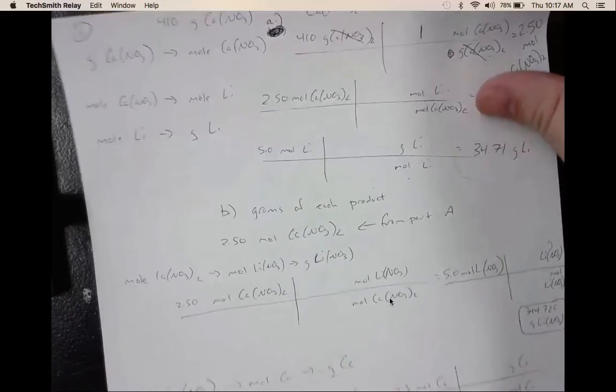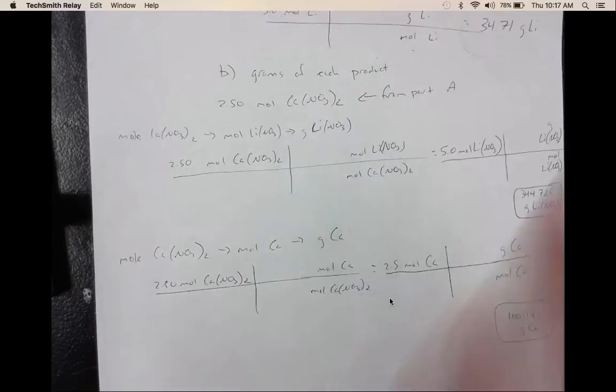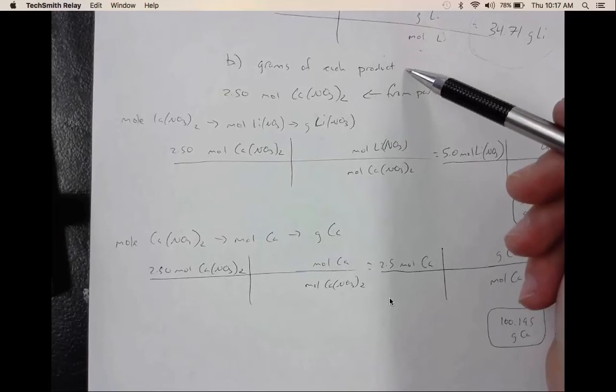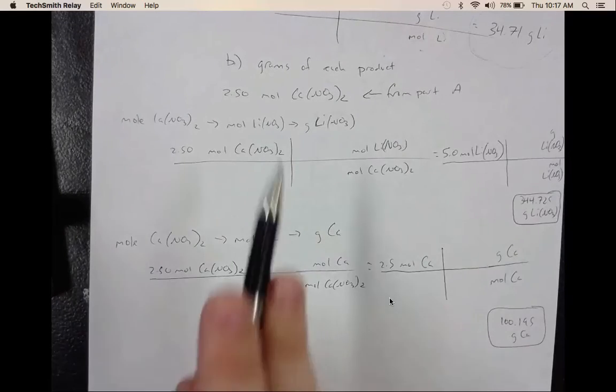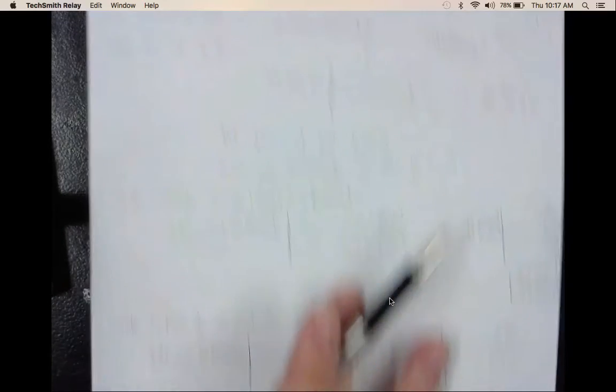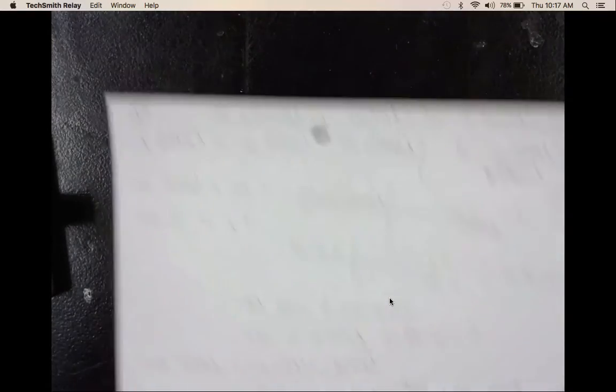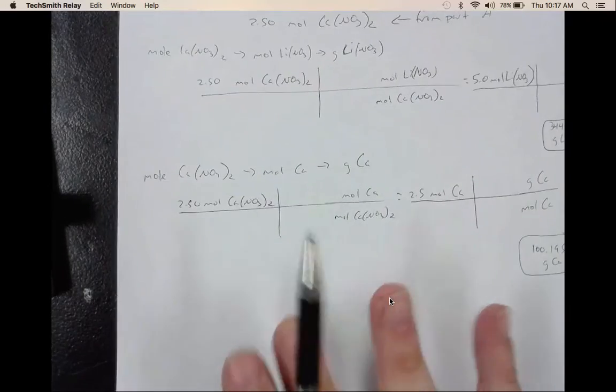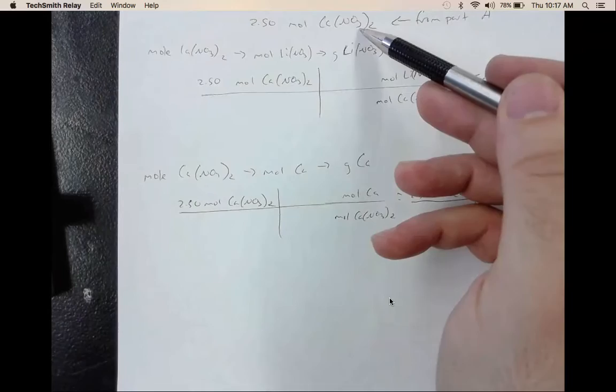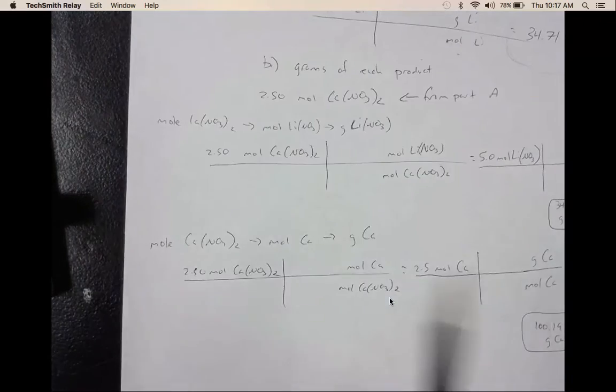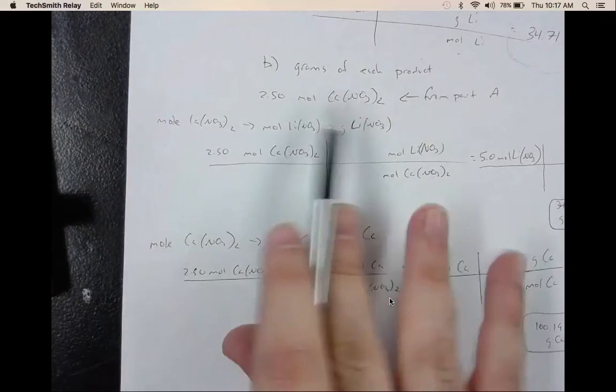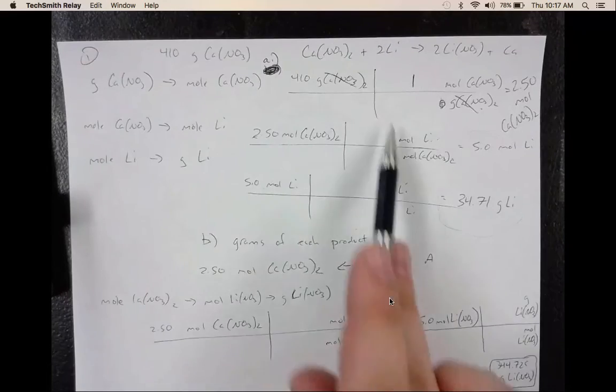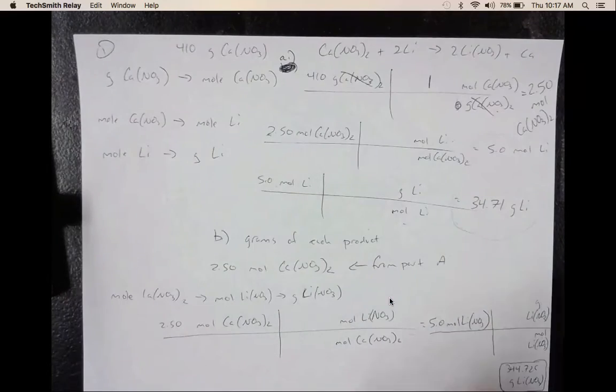So now we are on to part B. Part B is asking us to find the grams of each product. So the first step again, we are going to use these three steps. So the first step again is to calculate the moles from grams. So this is from part A, 2.5 moles of calcium nitrate. We already did that right here. So there's no need to do it again.